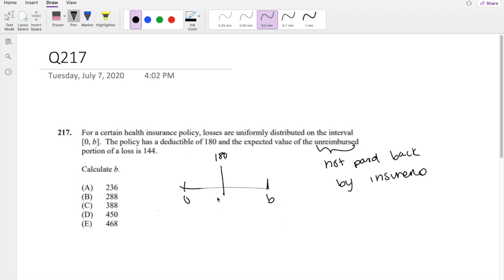So that means from 0 to deductible, the amount not paid back, the amount that is not covered by insurance, the amount you have to pay out of pocket is just the X, right? The loss.